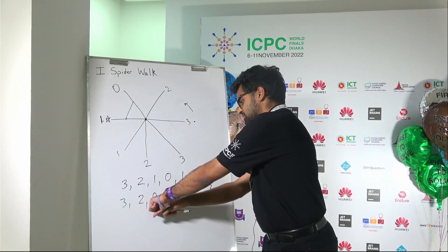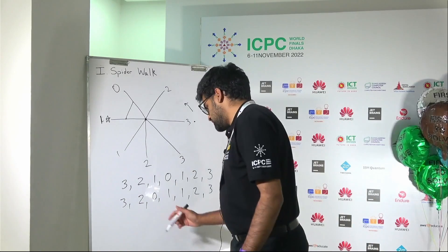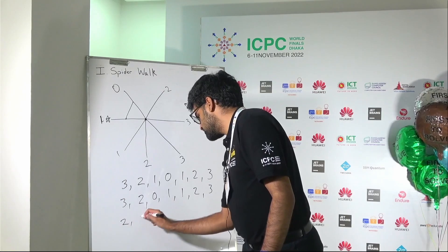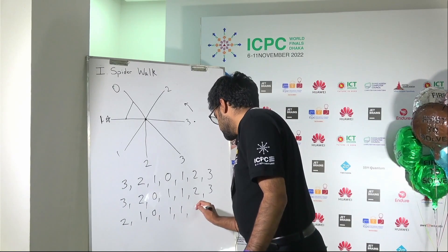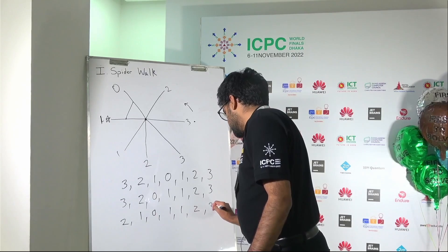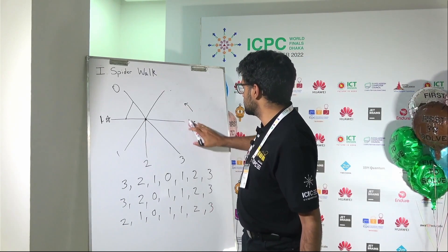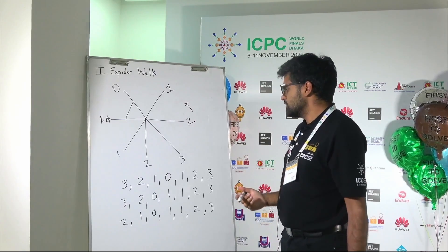So yet again we have to simulate this process of sweeping outwards from the 0. So by doing this again we actually reduce the answers to 2, 1, 0, 1, 1, 2, 3. And I'll update them up here as well. So this 3 goes down to a 2 and this 2 goes down to a 1. Excellent.